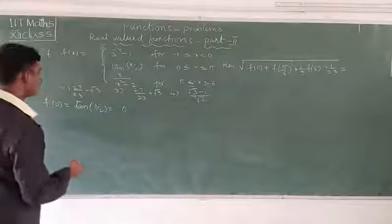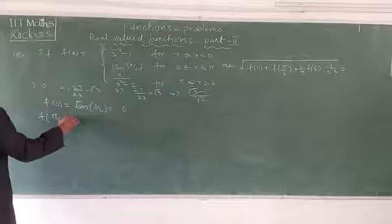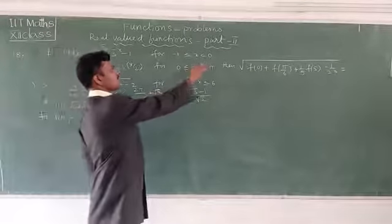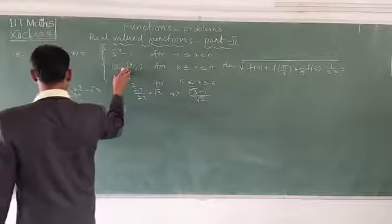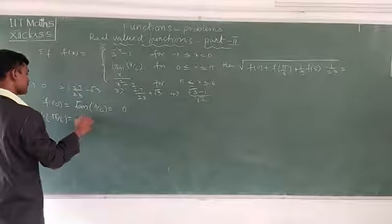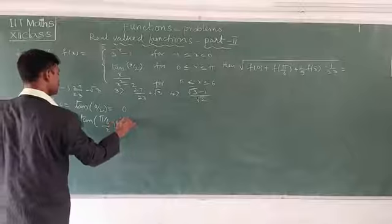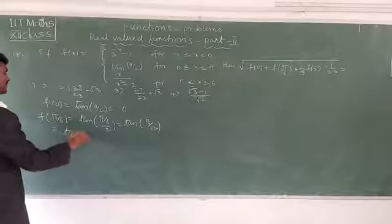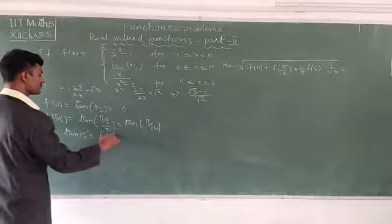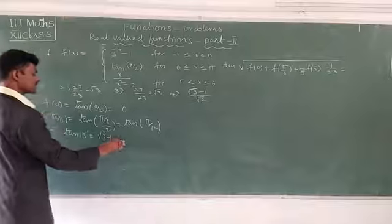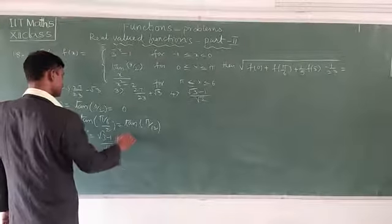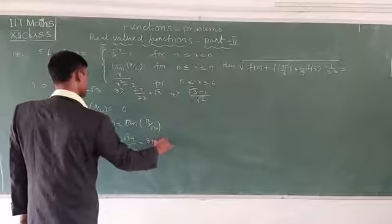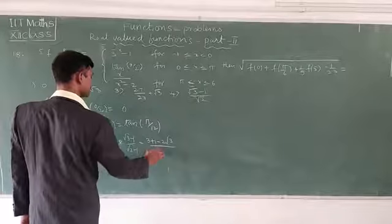Next, find f(π/6). Since π/6 lies between 0 and π, we use tan(x/2). So f(π/6) = tan(π/12) = tan 15°. Tan 15° equals (√3 - 1)/(√3 + 1). Rationalizing the denominator: this becomes (3 + 1 - 2√3)/(3 - 1) = (4 - 2√3)/2.